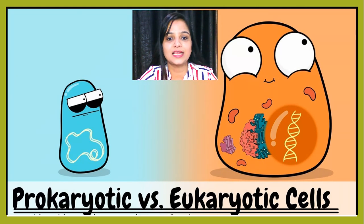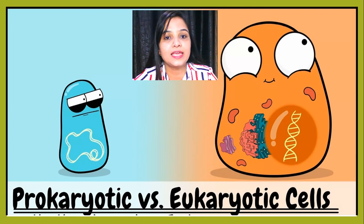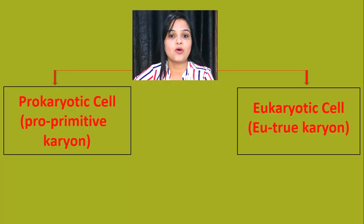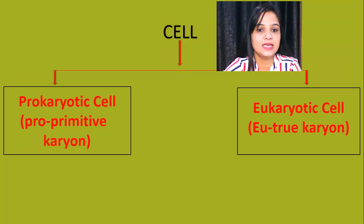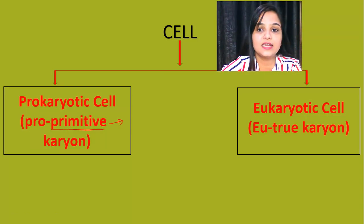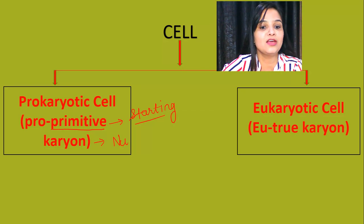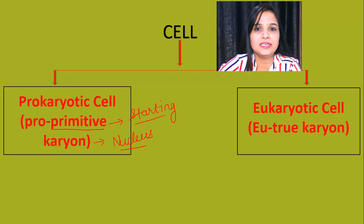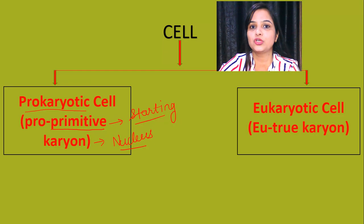Before starting, I'm going to tell you an important thing: why we are calling these cells prokaryotic and eukaryotic. So let's see the division and why we are naming them as such. Here you can see that 'pro' means primitive — meaning it's in a very starting phase. And the meaning of 'karyon' is nucleus. So it means the cells which contain a very primitive or starting-phase nucleus are known as prokaryotic cells.